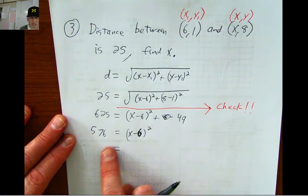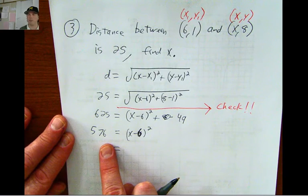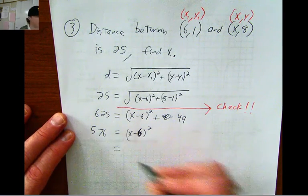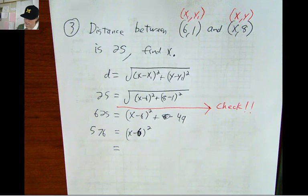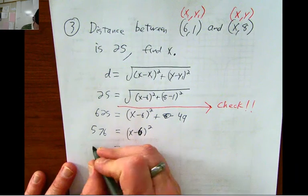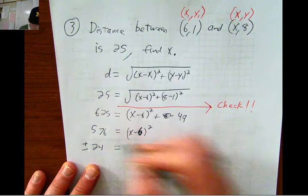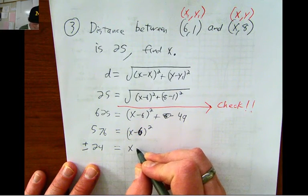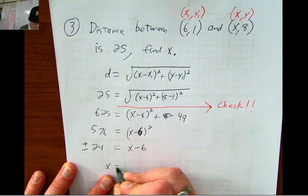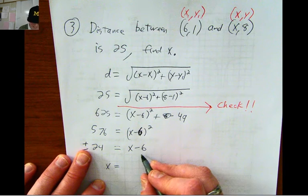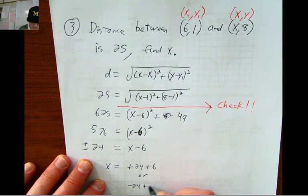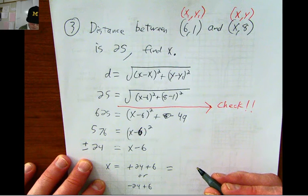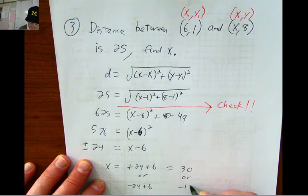Next step is I'd subtract 49 from both sides, and that becomes 576 equals x minus 6 quantity squared. Then you square root both sides, and square root of 576, I think it's 24. Let me check. Yes, 576 square root, yeah, it's 24. So, this becomes 24, but you just square root both sides. So, positive, negative 24 equals x minus 6, which means x equals, we're going to add 6 to both sides, but to both of these. So, it's going to be positive 24 plus 6, or negative 24 plus 6, which gives me, on one hand, I get 30, or on the other hand, I get negative 18.